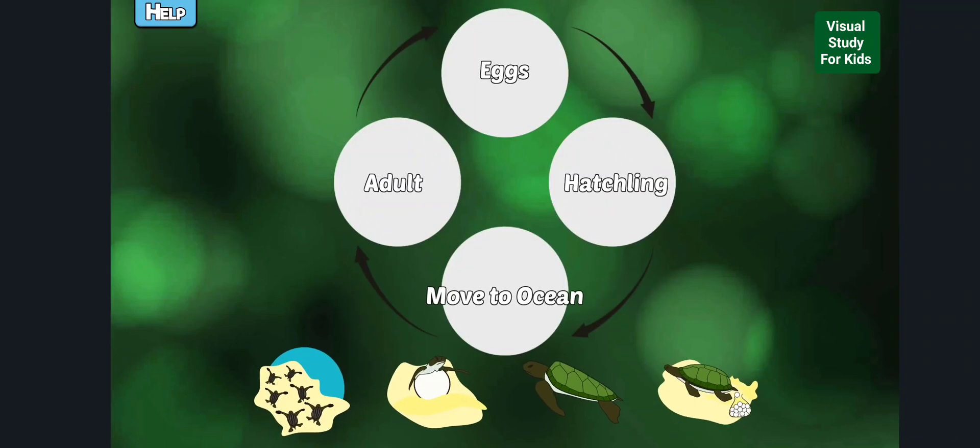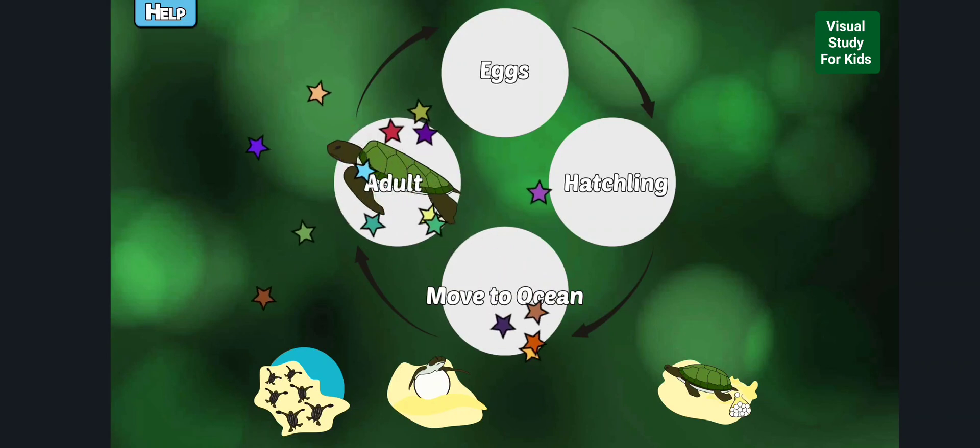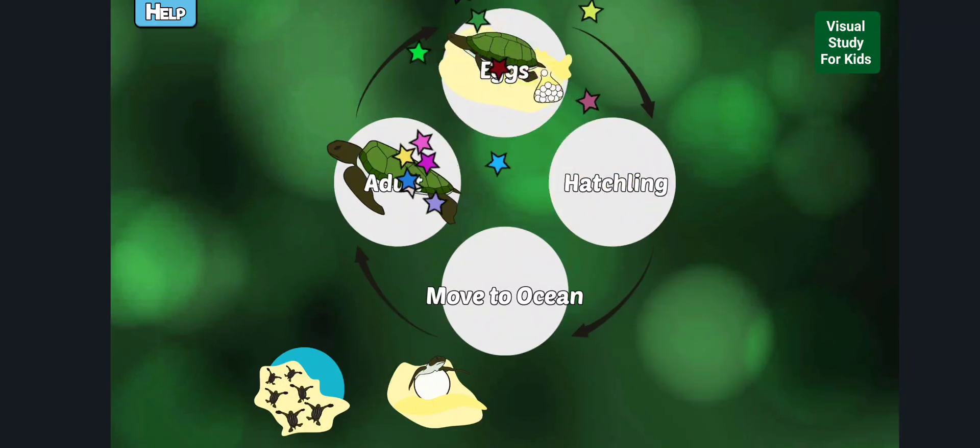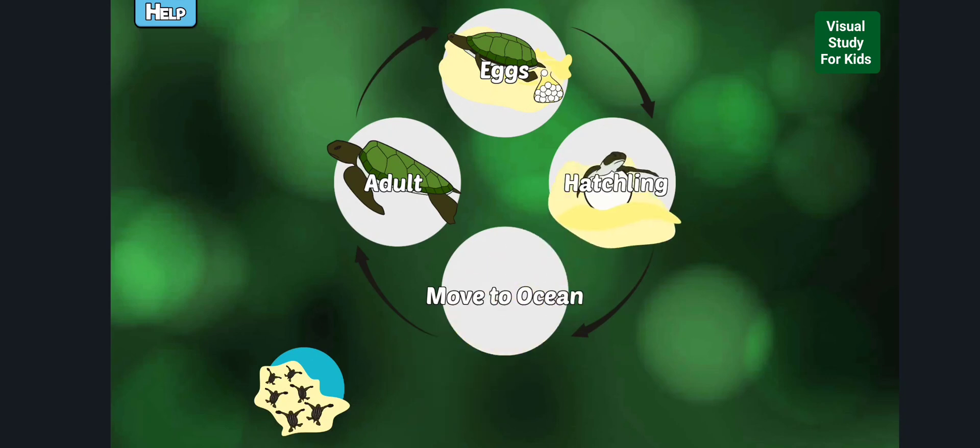Complete the sea turtle life cycle. It can take up to 30 years for turtles to reach adulthood. Mother turtles lay a nest of 100 to 200 eggs. Babies are completely independent at birth and will never see their mothers.